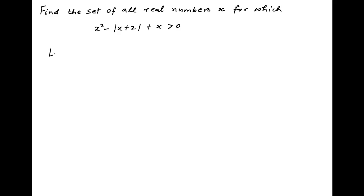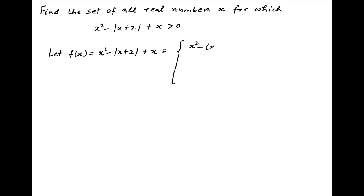Let's denote the left-hand side of the given inequality by f(x). So f(x) is equal to x squared minus modulus of x plus 2, plus x. Now when x plus 2 is positive, or x is greater than minus 2, then modulus of x plus 2 is equal to x plus 2. And therefore f(x) is equal to x squared minus x plus 2 plus x in this case.